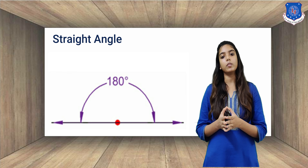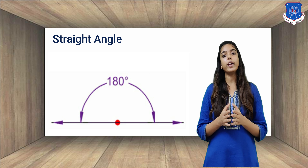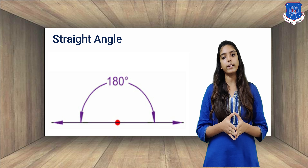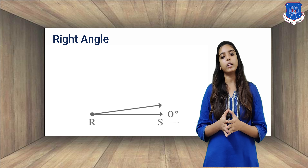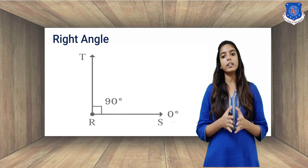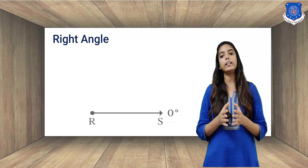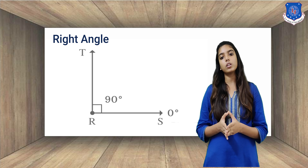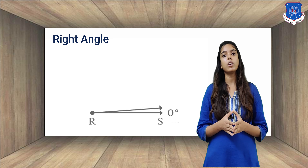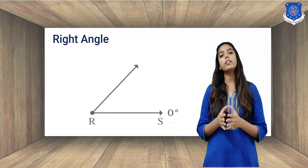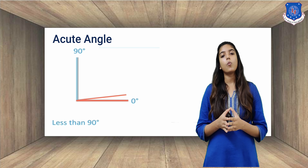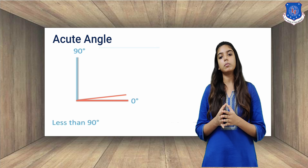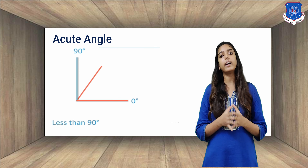What is a straight angle? An angle of 180 degrees is called a straight angle. What is a right angle? When two straight lines intersect each other at 90 degrees, or are perpendicular to each other at the intersection, they form a right angle. What is an acute angle? Acute angles measure less than 90 degrees.